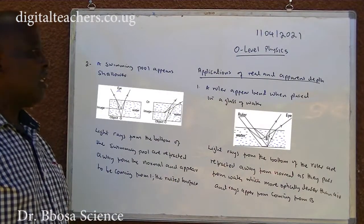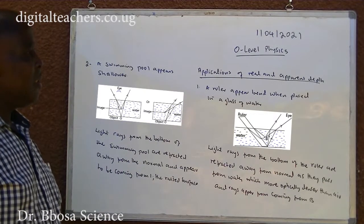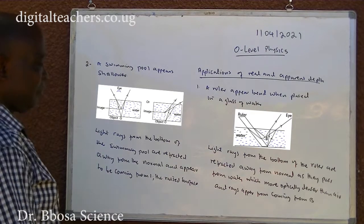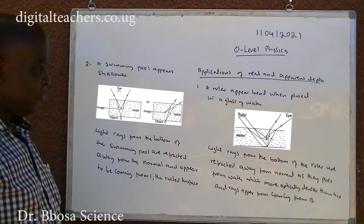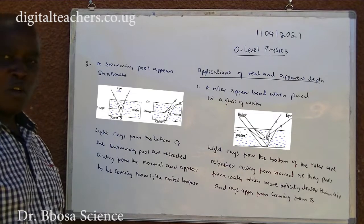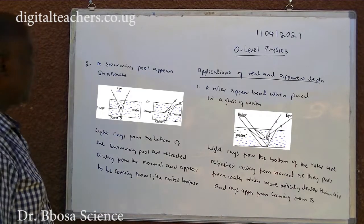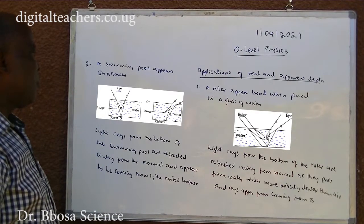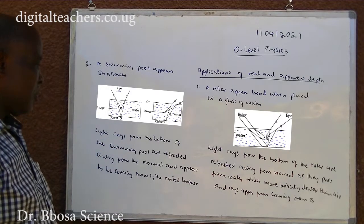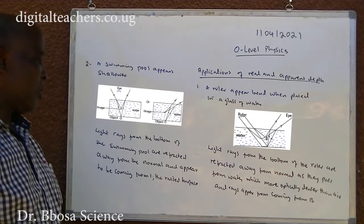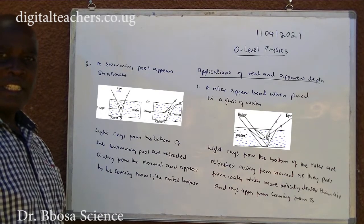Applications of real and apparent depth: 1. A ruler appears bent when placed in a glass of water. Light rays from the bottom of the ruler are refracted away from the normal as they pass from water which is more optically dense than air and appear to be coming from B. 2. A swimming pool appears shallower. Light rays from the bottom of the swimming pool are refracted away from the normal and appear to be coming from the raised surface.